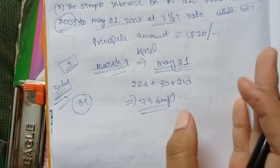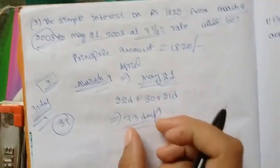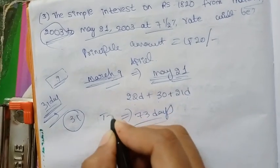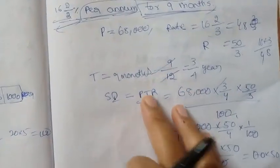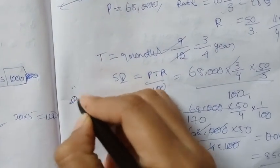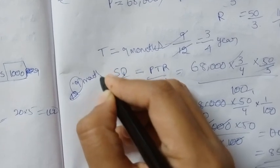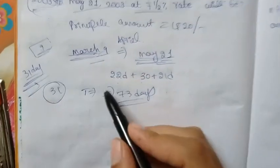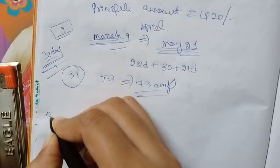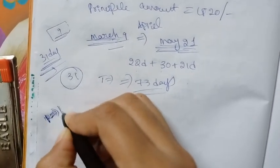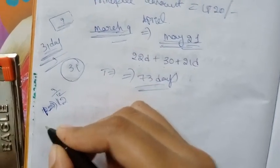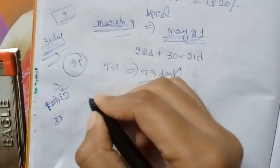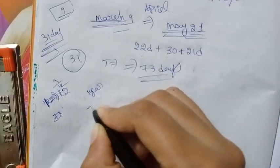We convert to years. In the previous problem, we divided months by 12. In case of days, we divide by 365. The days are 73 days. One year is 365 days. Since 2003 is not a leap year, we use 365 days. So time equals 73 divided by 365 years.